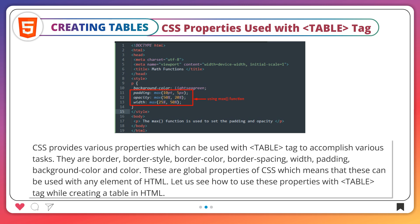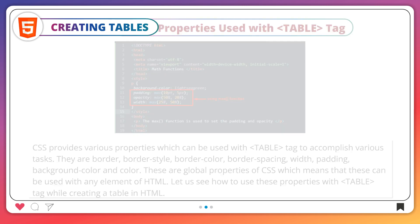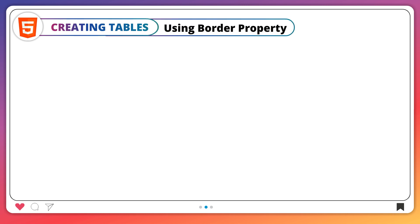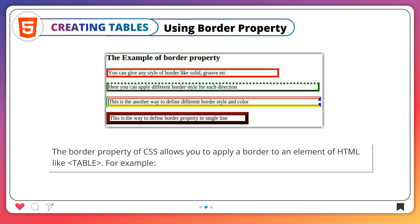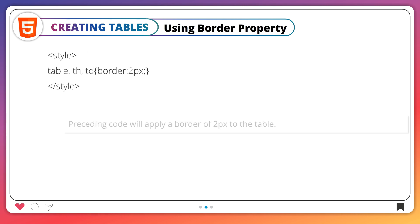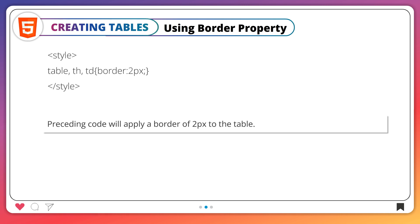Let us see how to use these properties with the table tag while creating a table in HTML. Using the border property: the border property of CSS allows you to apply a border to an element of HTML like a table. For example, the preceding code will apply a border of 2px to the table.